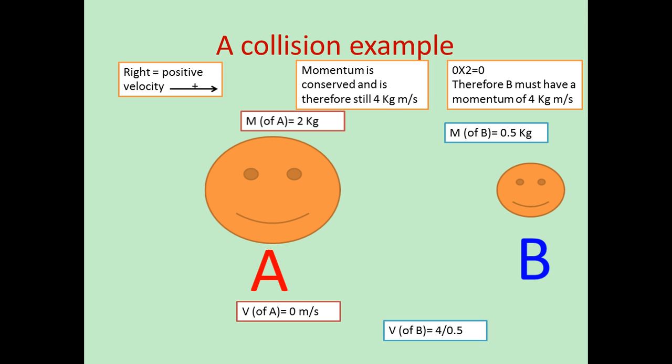To work out B's velocity, we use P equals mv. We have the momentum and the mass, so we do momentum divided by mass: 4 divided by 0.5, which equals 8 metres per second.